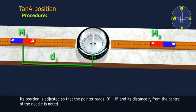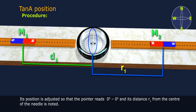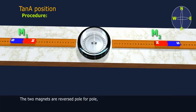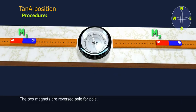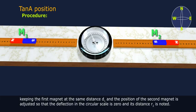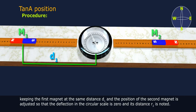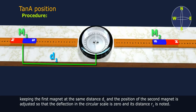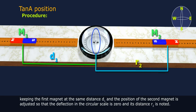Its position is adjusted so that the pointer reads 0 degree to 0 degree and its distance R1 from the center of the needle is noted. The two magnets are reversed pole for pole, keeping the first magnet at the same distance D1. The position of the second magnet is adjusted so that the deflection in the circular scale is 0 and its distance R2 is noted.